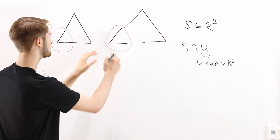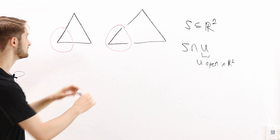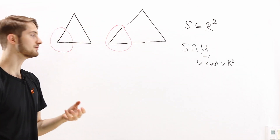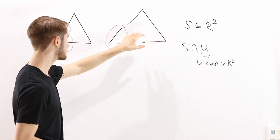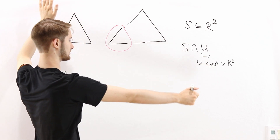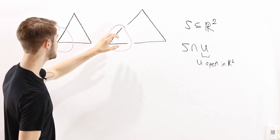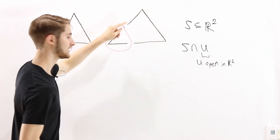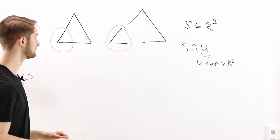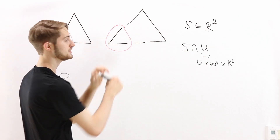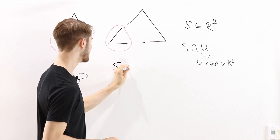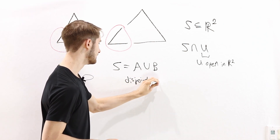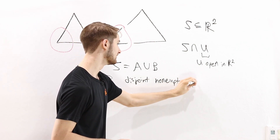We can do the same for the outside of the circle: the rest of the plane minus the circle's interior is also open in R2. So the triangle intersected with everything outside the circle gives another open set. This shows that in the induced topology on the right triangle, we can write it as the union of two disjoint, non-empty, open sets.